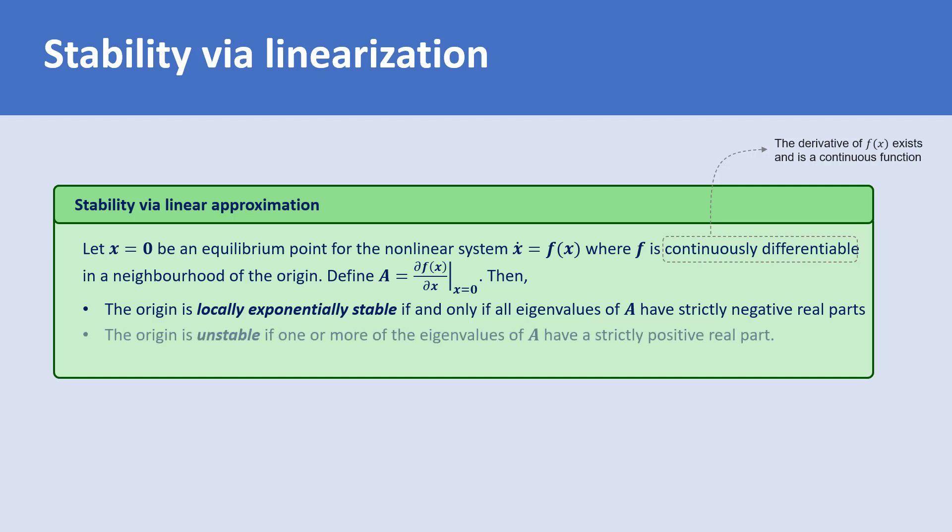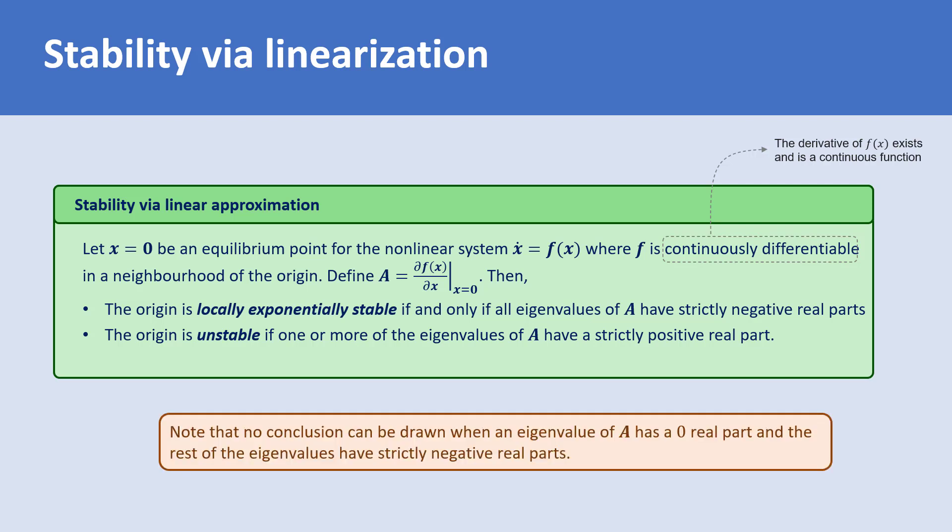And it is unstable if one or more eigenvalues of A have strictly positive real parts. Note that if A doesn't have any eigenvalue with positive real parts, but has an eigenvalue with zero real parts, we cannot draw any conclusion about the stability of the system.